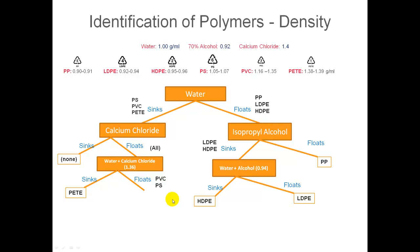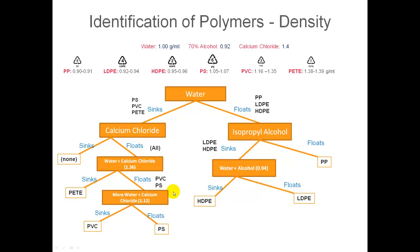We then continue adding more water to the calcium chloride solution until we get around 1.12. Since PVC has a higher density than polystyrene, PVC is going to sink first. The one that remains floating is polystyrene, which is the last to sink. So the one that sinks first is PVC, and the one that remains floating is polystyrene. Now we've isolated all three polymers on this side, and that's how it's done.